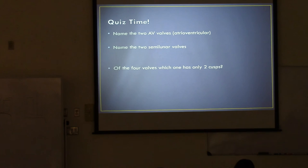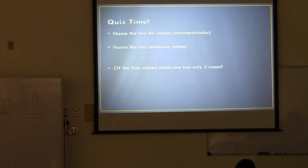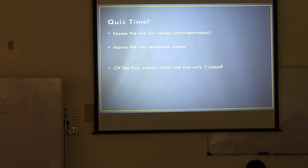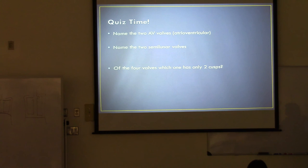Quiz time: Name the two AV valves — the atrioventricular valves. The tricuspid and mitral valves. Name the two semilunar valves: the pulmonic valve and the aortic valve. Of the four valves, which one has only two cusps? The mitral valve — it has two cusps and is usually the valve that needs to be replaced most often. The instructor wonders if having only two cusps is why it fails most often.